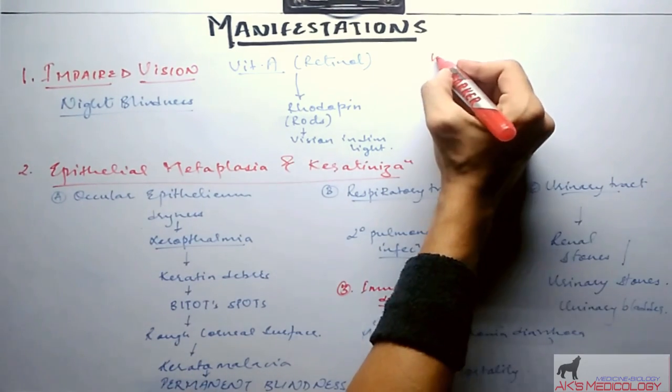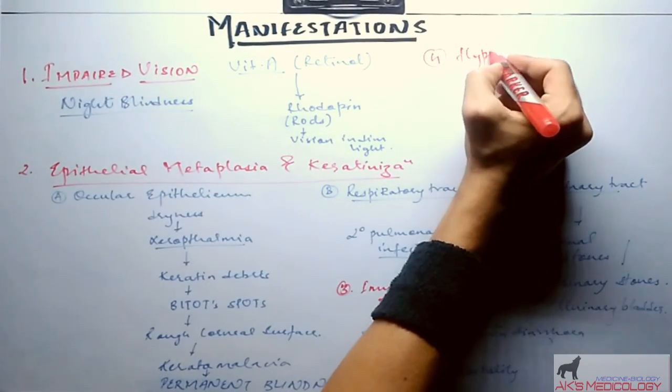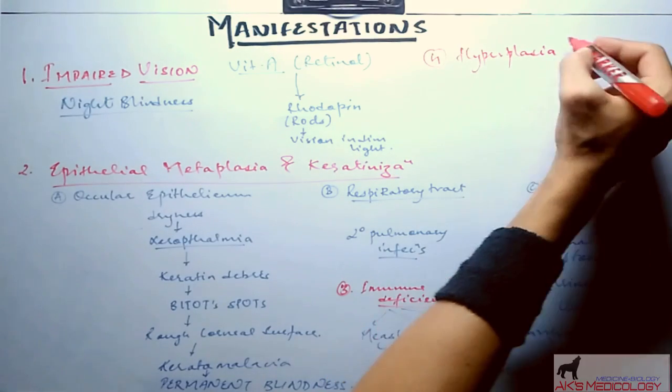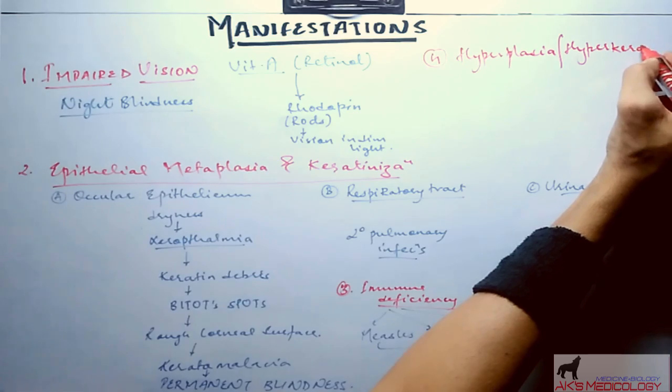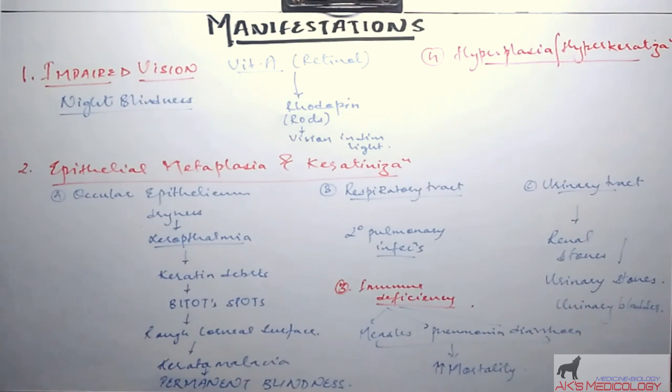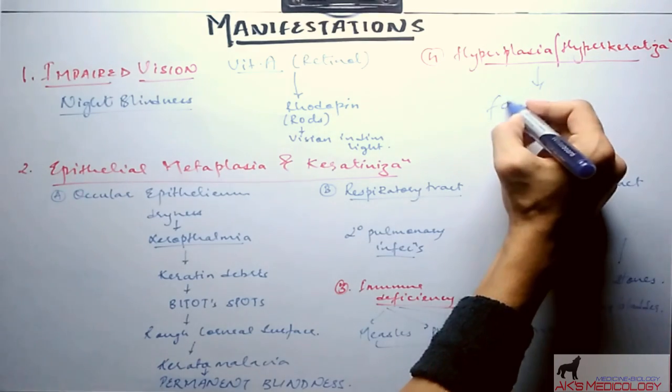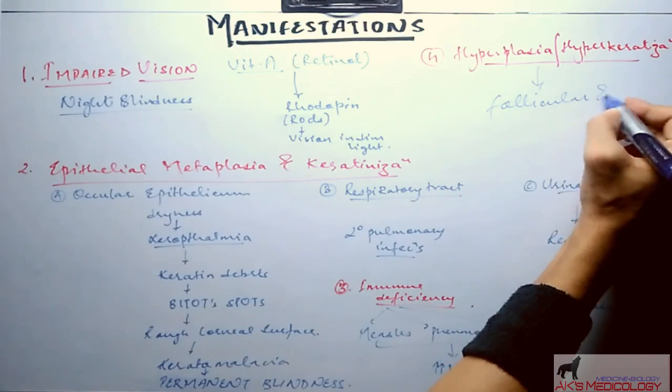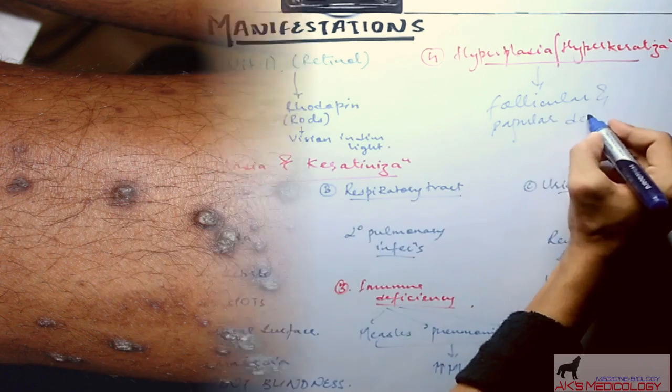Vitamin A deficiency also results in hyperplasia or hyperkeratinization of the epidermis. Hyperplasia is the increase in the size of cells. This resultant increase in the size of cells of epidermis causes plugging of the adnexal glands. Adnexal glands are the glands of the connective tissue of the epidermis. These plugged adnexal glands because of their secretions continuously grow and produce follicular and papular dermatosis.